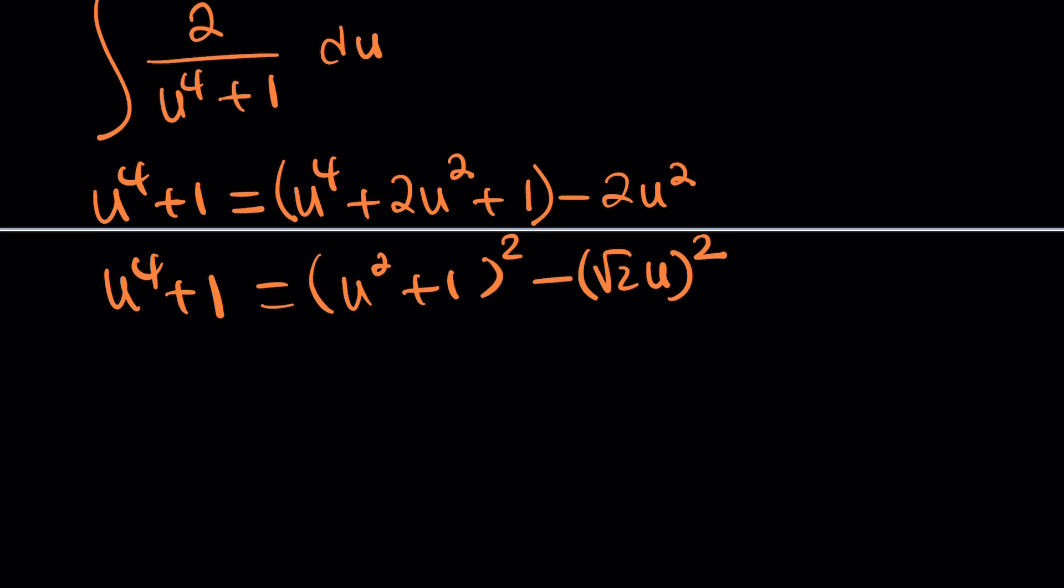This part is u squared plus 1 quantity squared. And this is root 2u quantity squared. So what I have is called a difference of two squares. I think there are two super important things in math. I believe this is one of them, difference of two squares. The second one would probably be the Pythagorean theorem. If you know others, number 3, number 4, number 5, you can name them in the comment section down below. Great. That really helps with the algorithm. And of course, don't forget to like and subscribe.